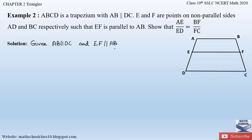Since AB is parallel to DC and EF is parallel to AB, we can also say that EF is parallel to DC. Write down: EF is parallel to DC, by the property that lines parallel to the same line are parallel to each other.